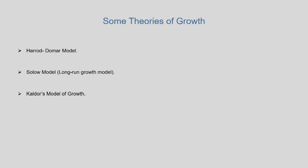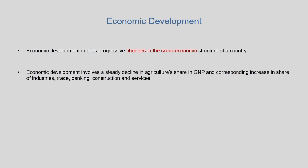It is important to position these growth models in the context of economic development. Economic development implies progressive changes in the socio-economic structure of a country — a steady decline in agriculture's share in GNP and a corresponding increase in shares of industries, trade, banking, construction, and services. This is one of the most important distinctions between economic growth and development, starting from what Kuznets discussed in terms of structural transformation. Economic growth and economic development are often used synonymously, with the distinction becoming clearer when the term human development is used.